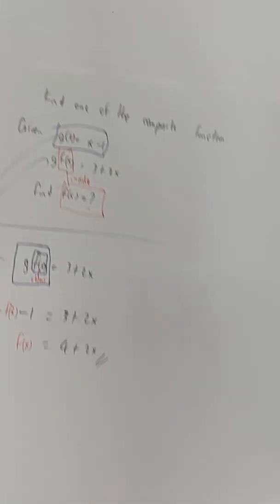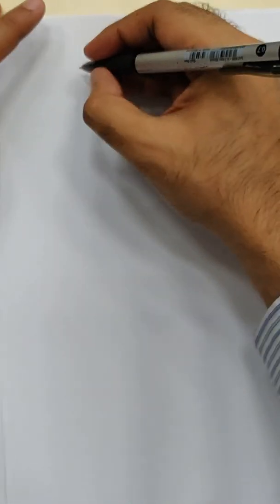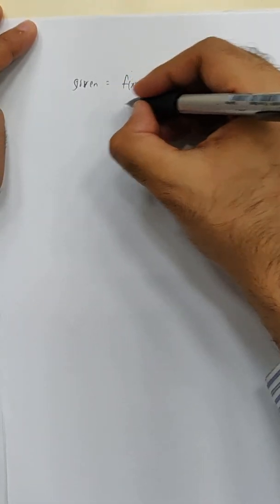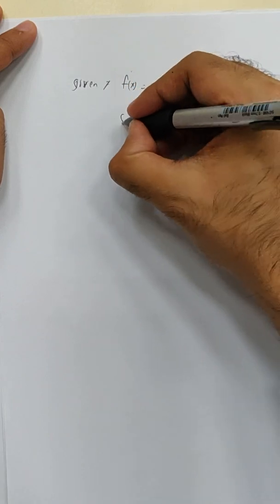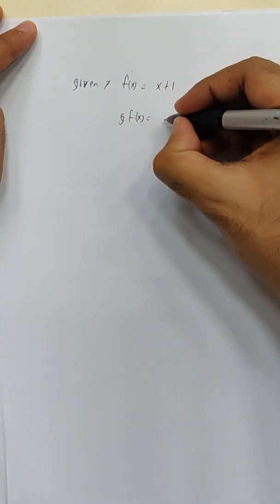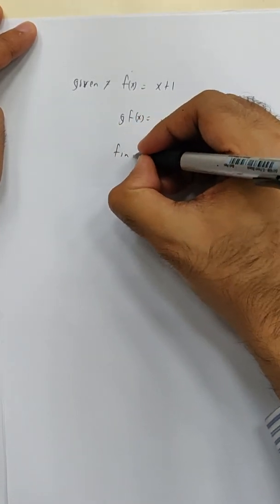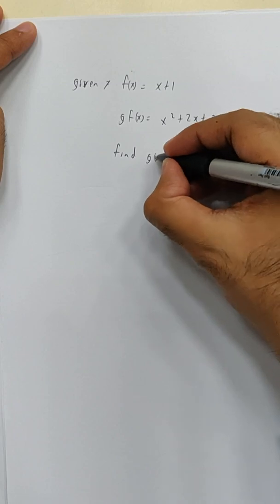Another one is tough. Let's say you're given something like this. Given f(x) = x plus 1. And you're also given g(f(x)) = x squared plus 2x plus 2. Find g.